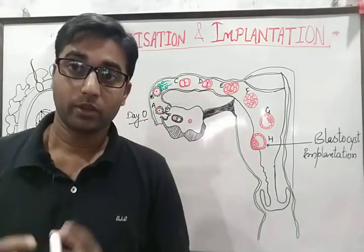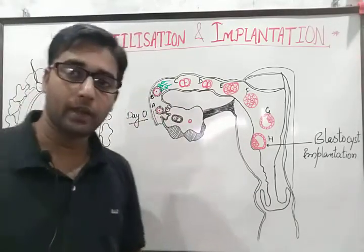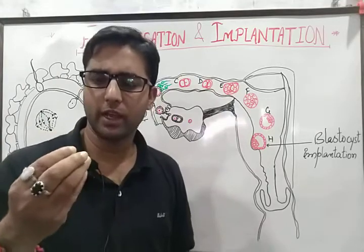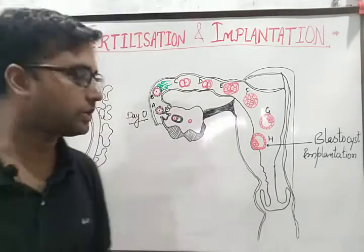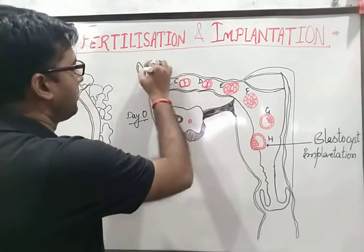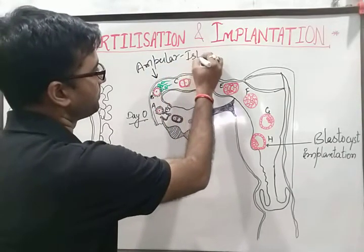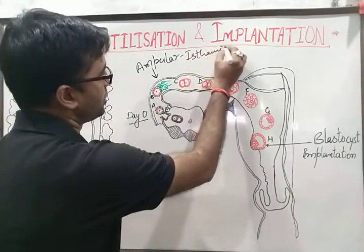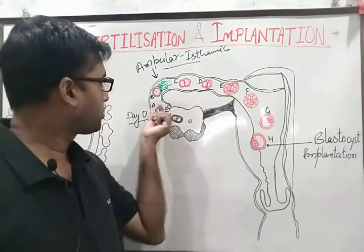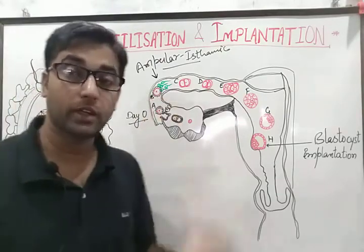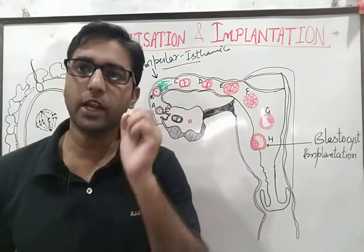At this stage, the egg is present at the ampullary region and pushed somewhat towards the ampullary-isthmic junction. At day 0, it is pushed to the ampullary-isthmic junction, and it is at this ampullary-isthmic junction that fertilization takes place.